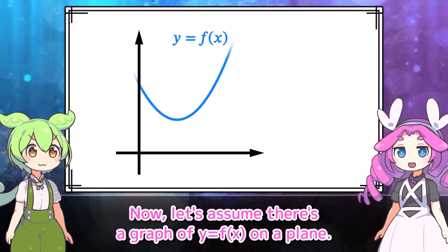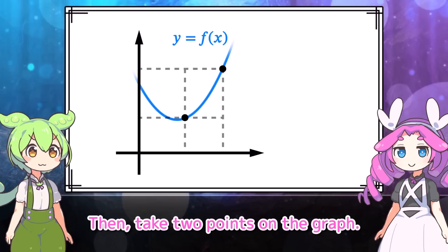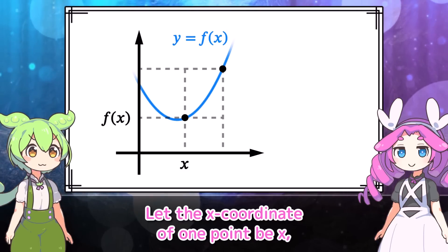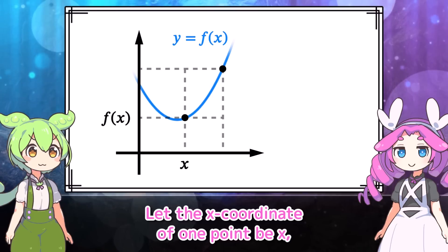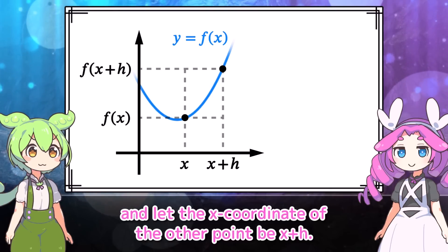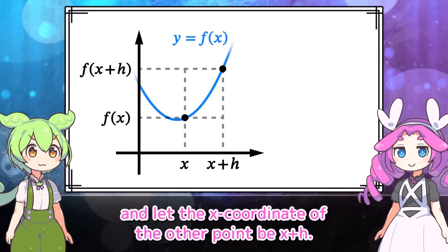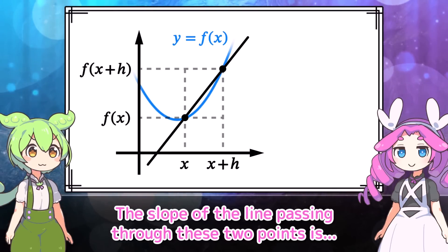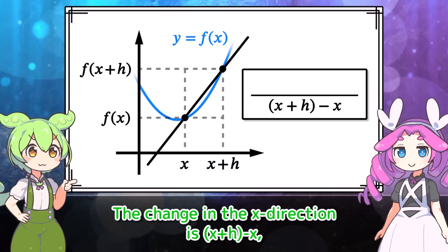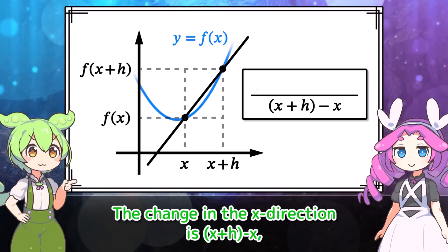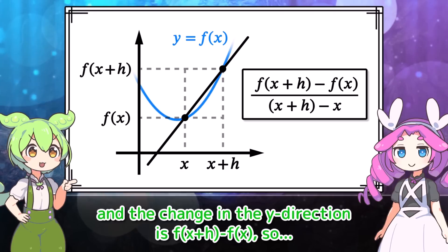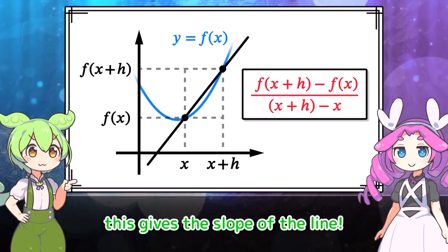Now let's assume there's a graph of y equals f of x on a plane. Then take two points on the graph. Let the x-coordinate of one point be x, and let the x-coordinate of the other point be x plus h. The slope of the line passing through these two points — the change in the x-direction is x plus h minus x, and the change in the y-direction is f of x plus h minus f of x. So this gives the slope of the line.